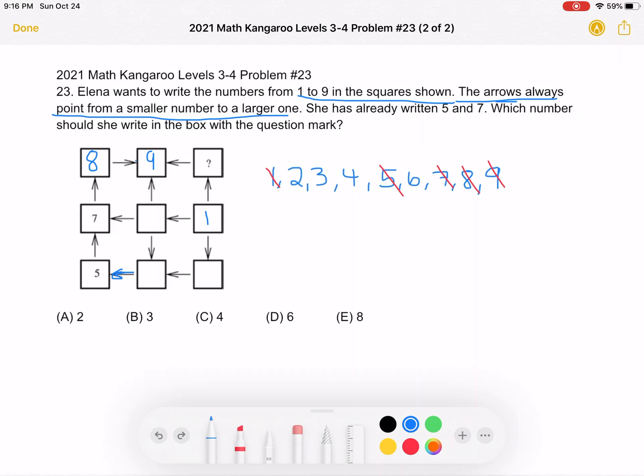Well, we can have either 2, 3, or 4. However, we also see that this box has an arrow pointing toward it coming down from the top and another arrow pointing toward it coming from the side. That means that this number is greater than two other numbers that we have not placed yet.